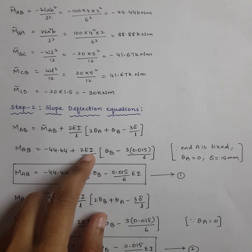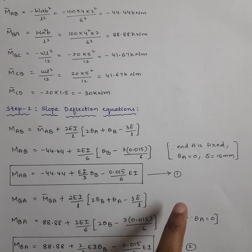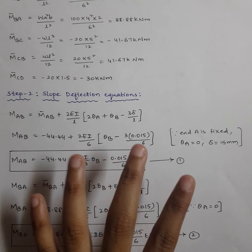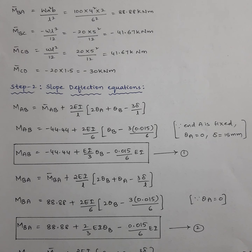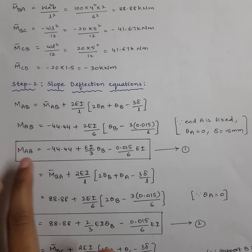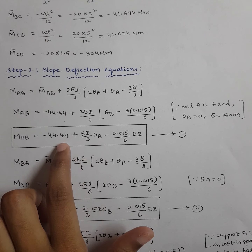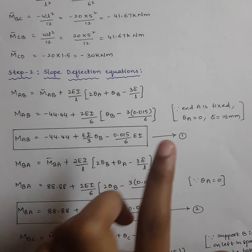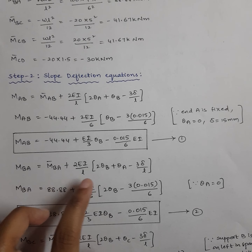I will not substitute the values of E and I now because it makes a very clumsy equation. I will calculate EIθB and EIθC first, then calculate the moments easily. So the equation for M_AB turns out to be: minus 44.44 + (EI/3)θB − 0.015/6 × EI.